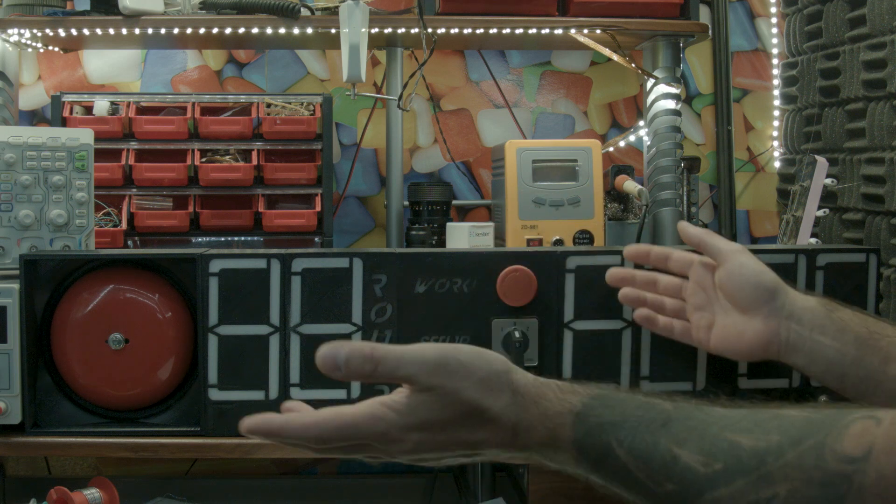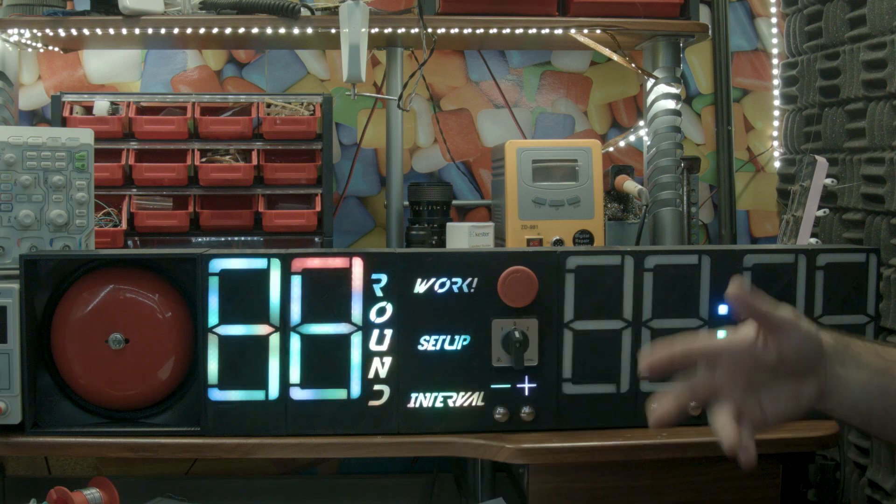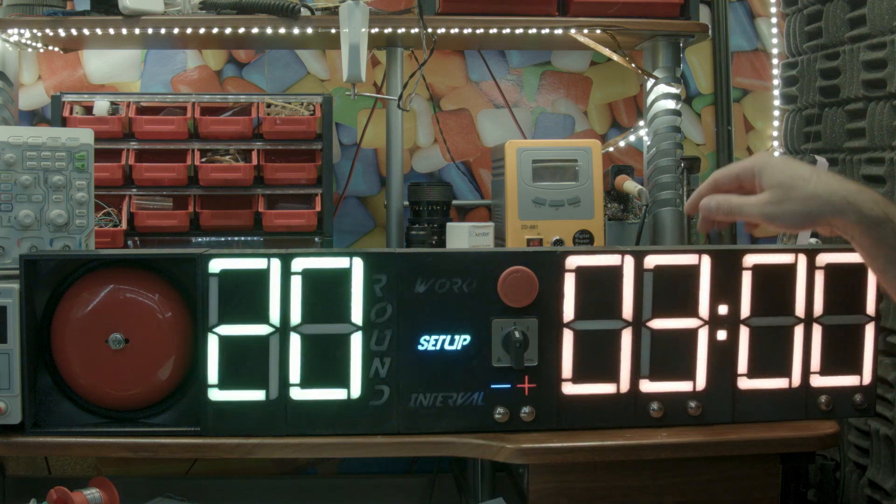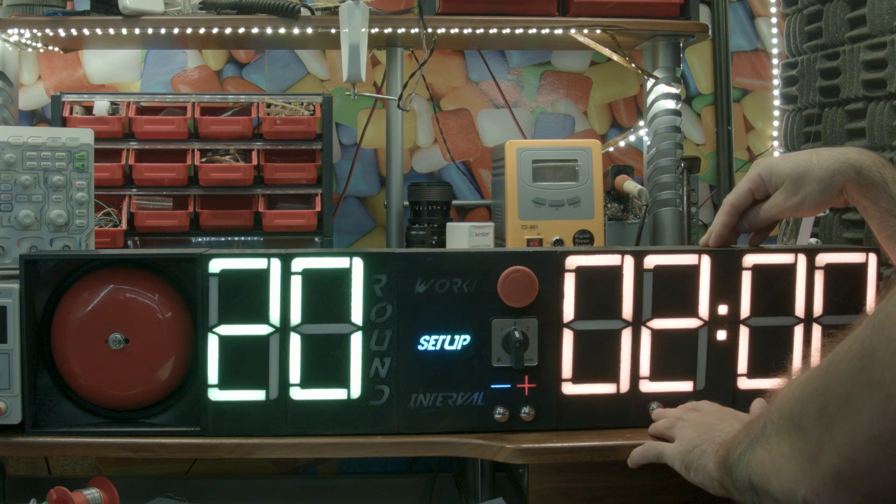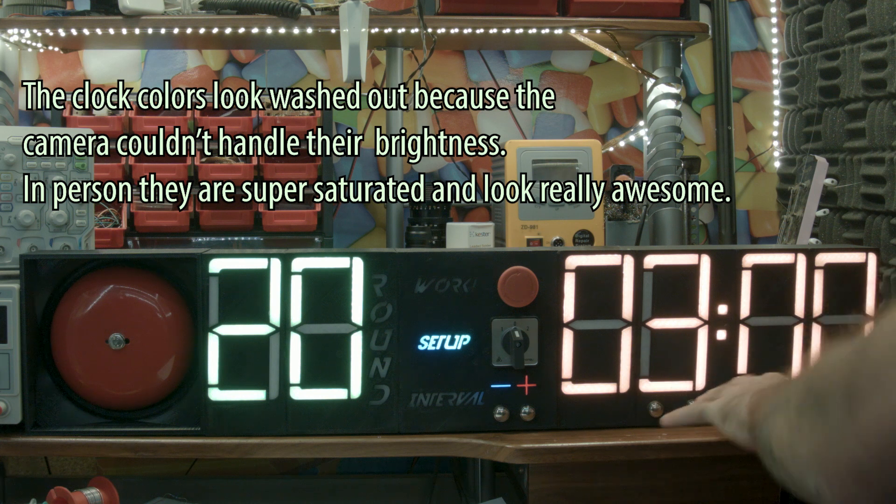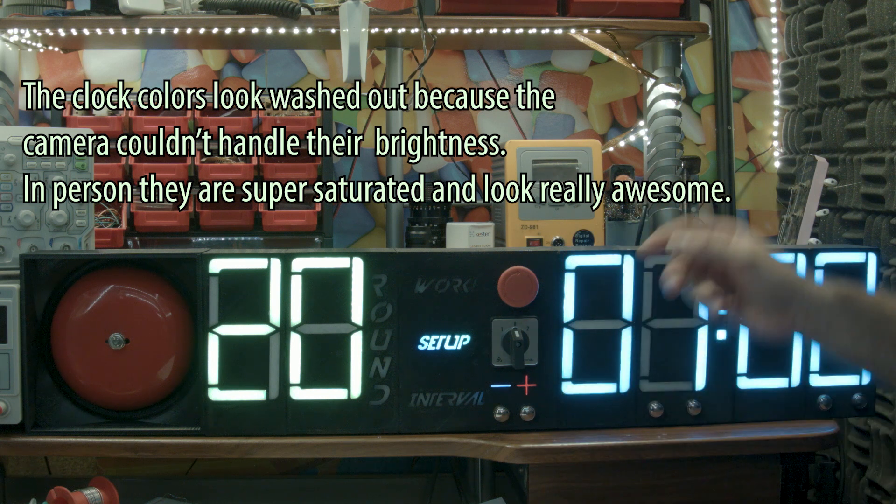Might as well let you see it doing its thing, right? So when turning it on, we get an animation just to show off a little. And here, in setup mode, when these numbers are orange, we can set our round time in minutes and seconds. And if I don't touch these buttons for 5 seconds, it will switch to rest time. Like so.